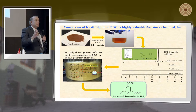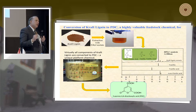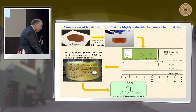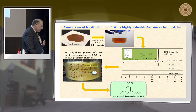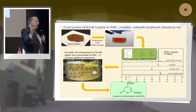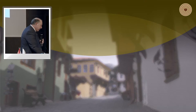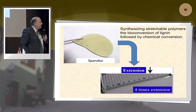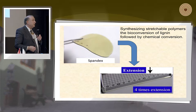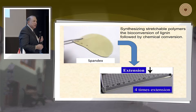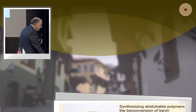We call this compound PDC. Through its two carboxylic acid (COOH) groups, we can polymerize it to form a long chain. One of the products we've produced is a spandex-type rubber material that stretches four times. Spandex is used in exercise clothing and tight jeans — those are all polyurethane-type materials — and we can now produce that from a component of wood through this PDC compound.